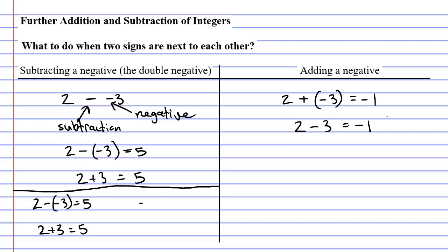And what a lot of students do is they look at negative 2 minus 3, like so, and they think this is positive 5, but it's not. This one equals negative 5.